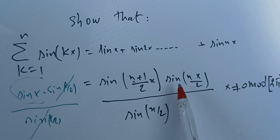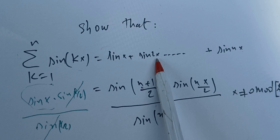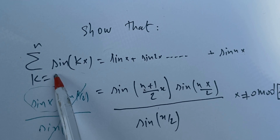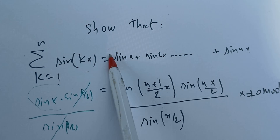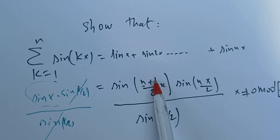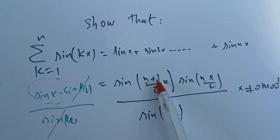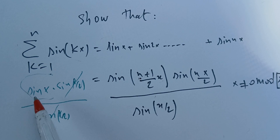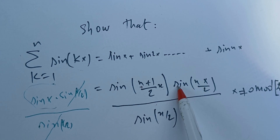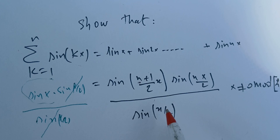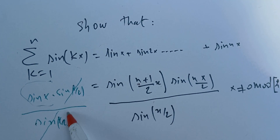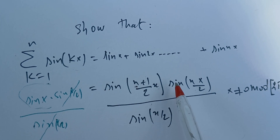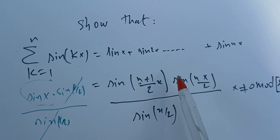First we check that this proposition is true for n equals 1. On the left side when n is 1 we have only sine x. On the right side we plug n equals 1 and get 2/2 which is x, giving sine x. We have sine of x/2 in the numerator and sine of x/2 in the denominator, so they cancel, leaving sine x. The left side and right side are equal, proving the property is true for n equals 1.